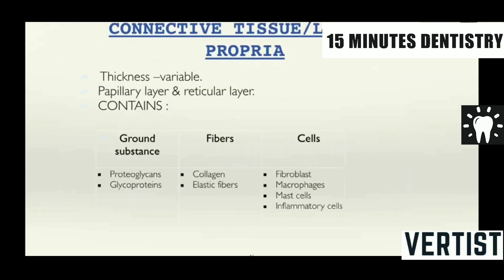There is the connective tissue — you have the oral epithelium, you have the basement membrane, then the connective tissue which is called lamina propria. It has two layers: the papillary layer and the reticular layer. The papillary layer is where you have the connective tissue papillae going up into the epithelium, and the reticular layer is where you have the reticular fibers. Ground substances are present, basically proteoglycans and glycoproteins. There are different fibers like collagen, elastic fibers, oxytalan fibers and reticular fibers. The major cells which are present are fibroblasts, macrophages, mast cells and inflammatory cells.